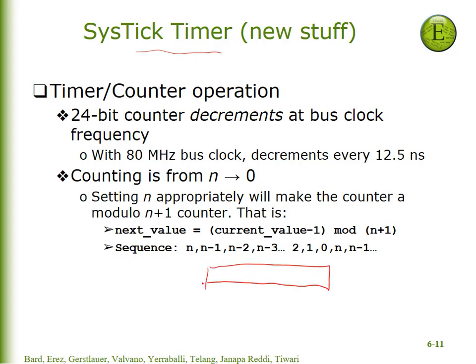It happens to be a down counter and it happens to be 24 bits wide. This counter, which has the name 'current', is a 24-bit number which will count down on the bus cycle. In this lab it will count down every 12.5 nanoseconds.